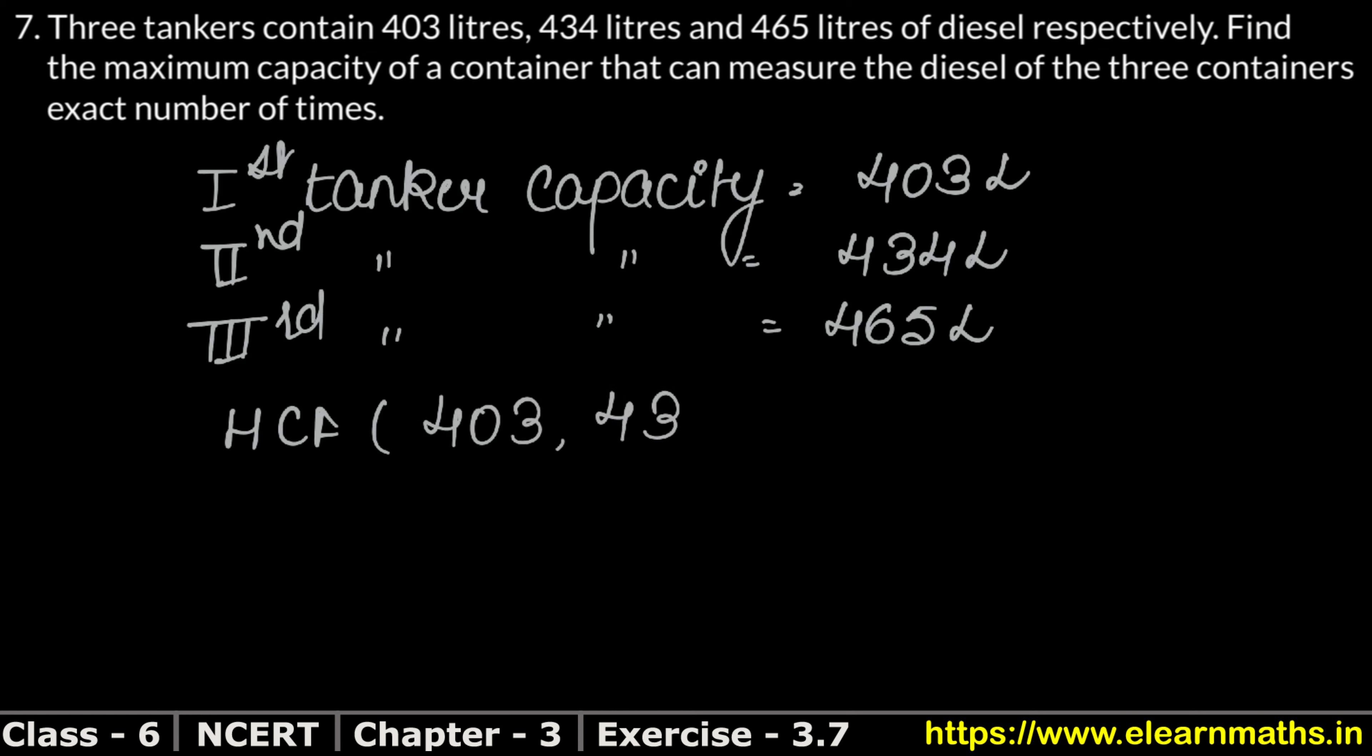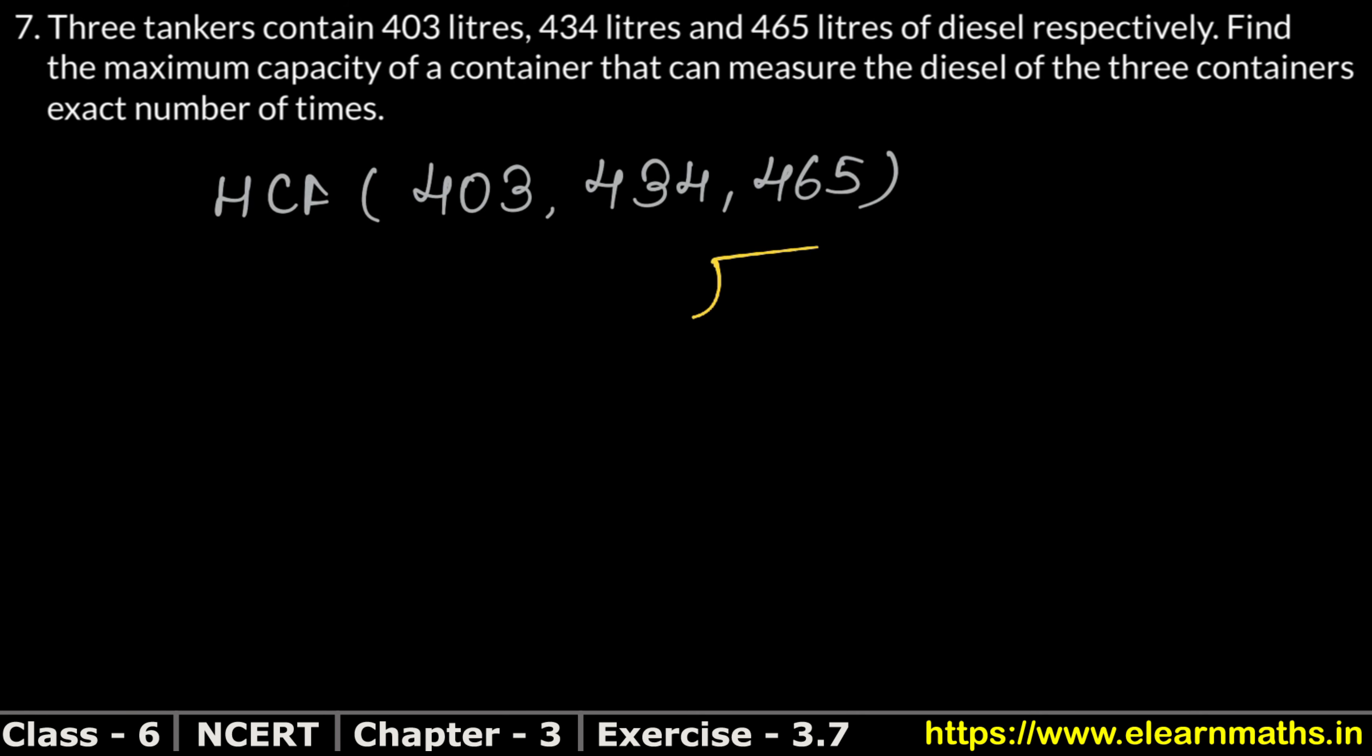So HCF of which we need to measure? 403, 434 and 465. We will use the division method. We will find HCF from the first 2 digits. I'll write the big value inside and a small value, 434 divided by 403. This will only go one time, 403, so 1 times 403.